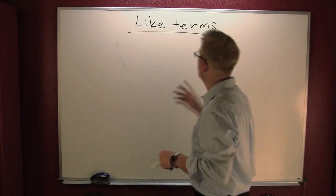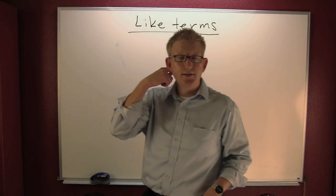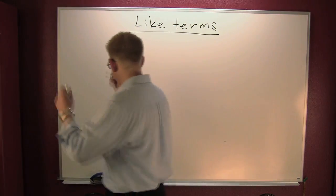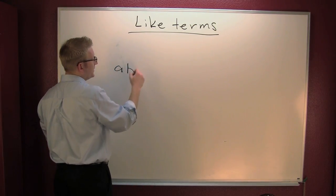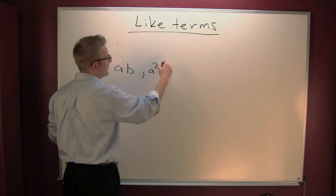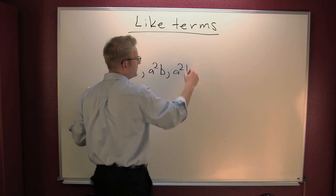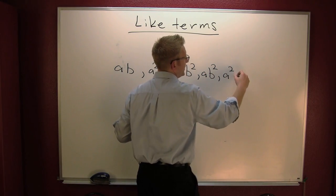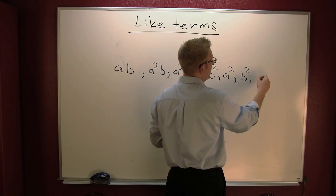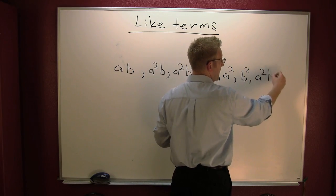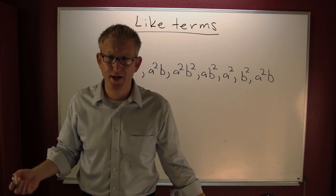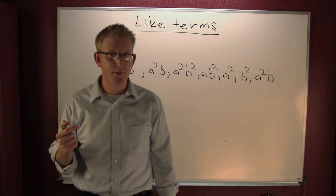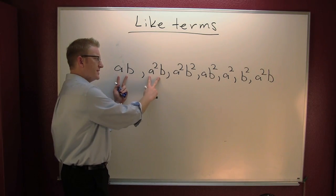Like terms are terms with exactly the same variables raised to exactly the same powers. Let me draw up some examples: ab, a squared b, a squared b squared, ab squared, a squared b squared, and a squared b. Are any of these like terms?